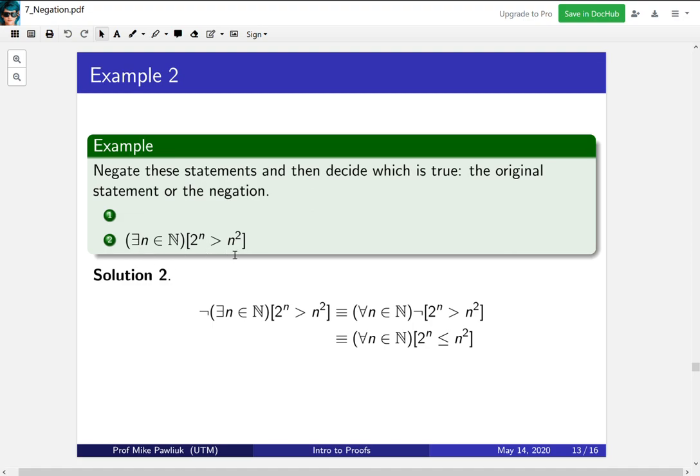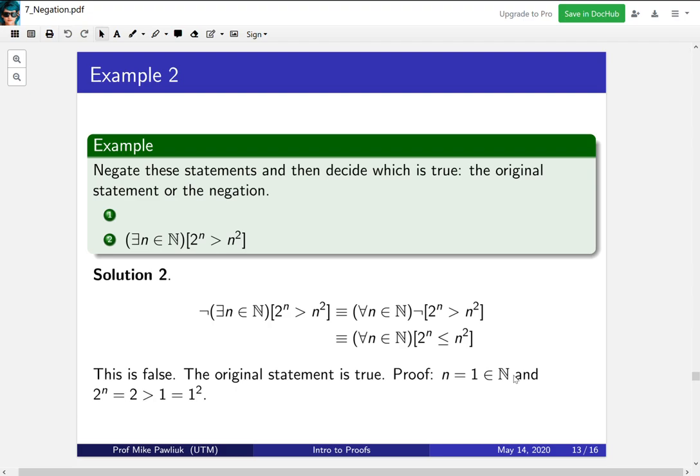let's look at the original statement. Is there a natural number where 2 to the n is greater than n squared? Well, the negation is false. This is not true. And the original statement is true. If you're trying to prove this original statement, you need to show that something exists. So it's your job to find something. Here's an example that I came up with. Take n equals 1, which is a natural number. 2 to the n in this case is 2, which is greater than 1, which is 1 squared.